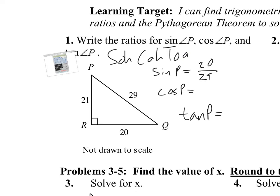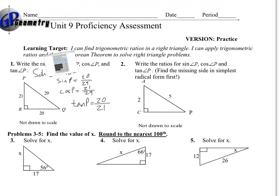Cosine is, by definition, adjacent over hypotenuse. The adjacent is 21 and the hypotenuse is 29, so we get 21 over 29. Tangent is opposite over adjacent, so tangent is 20 over 21. Those are our ratios — we're not trying to find the angles or anything like that. That's all we need for that problem.